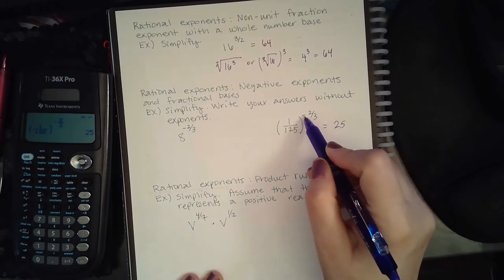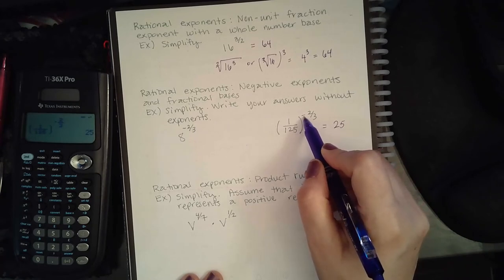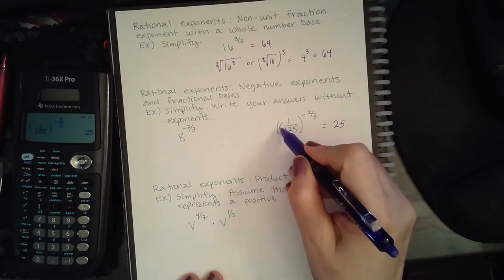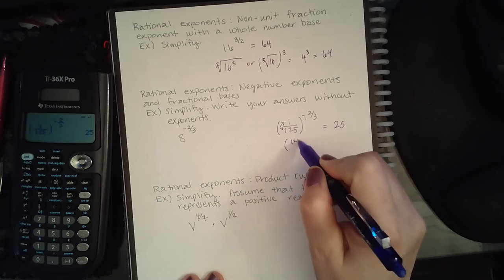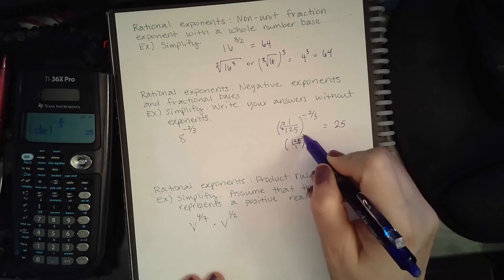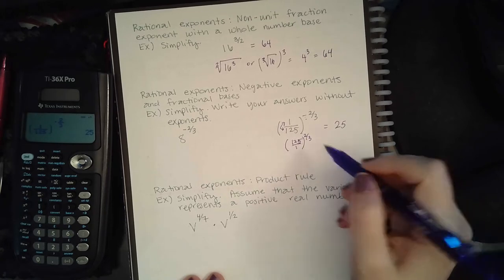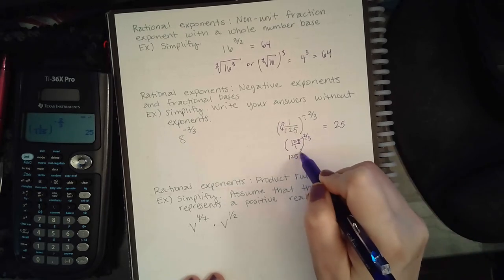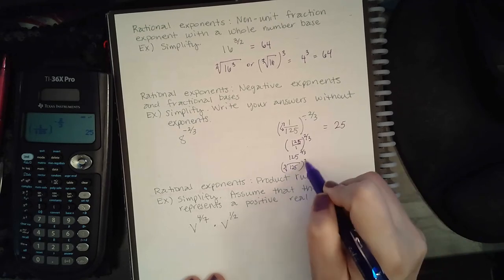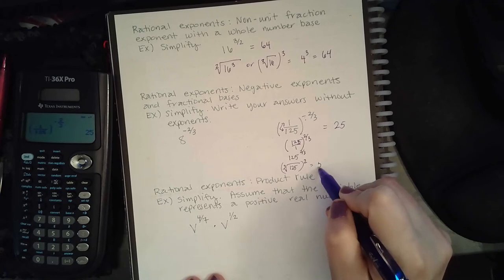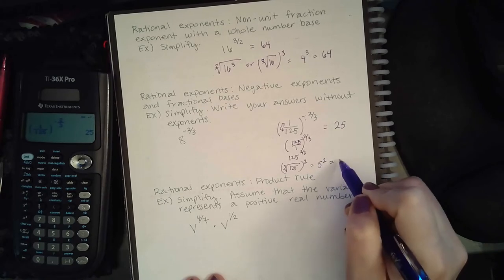So remember what a negative does is it takes your fraction and it flips it upside down. So this negative will cause this to become 125 over 1, and now it's a positive exponent which is the same as just saying 125 to the two-thirds. So that's the cube root of 125 squared. The cube root of 125 is 5, and if I square that I get 25.